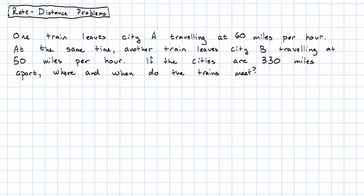Typically in problems like this, we have two moving objects. These problems include the classic algebra word problem. One train leaves City A, traveling at 60 miles per hour, and at the same time, another train leaves City B, traveling at 50 miles per hour. If the cities are 330 miles apart, where and when do the trains meet?